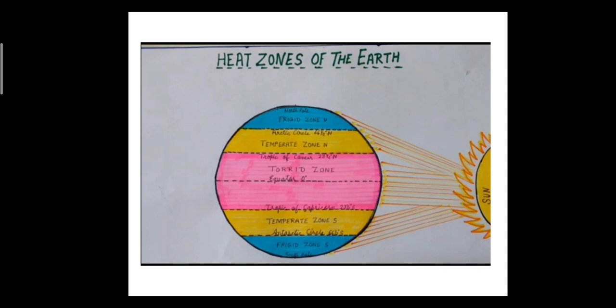As you can see, this is the heat zones of the earth. The part colored in pink is the torrid zone, the part colored in yellow is the temperate zone, and the part colored in blue is the frigid zone. Based on the heat received by the earth, the zones are classified into three types: torrid, temperate, and frigid zone. Let us now read about each heat zone in detail.